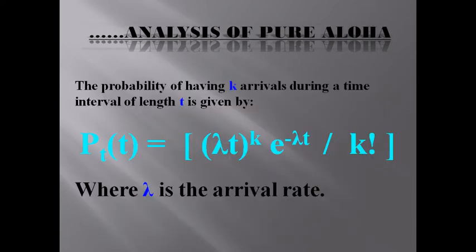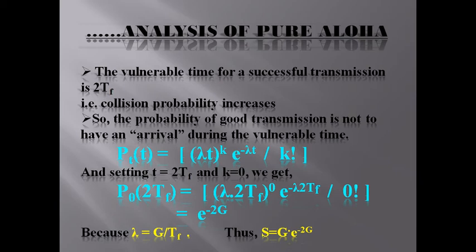The probability of having k arrivals during a time interval of length t is given by: P(t) = (λt)^k × e^(−λt) / k!, where λ is the arrival rate. The vulnerable time for a successful transmission is 2Tf, so collision probability increases. The probability of a good transmission is having zero arrivals during the vulnerable time. Setting t = 2Tf (frame time) and k = 0, we get P₀(2Tf) = (λ·2Tf)^0 × e^(−λ·2Tf) / 0! = e^(−2g), because λ = G/Tf. Thus S = G × e^(−2G).